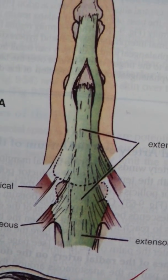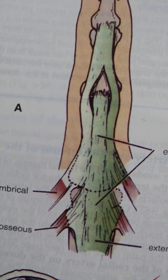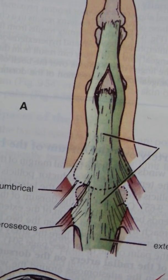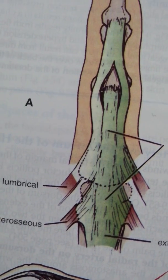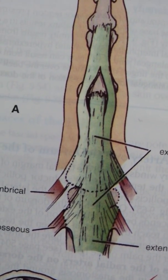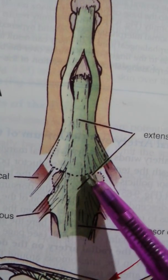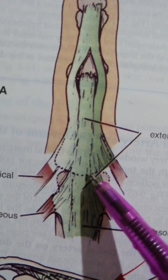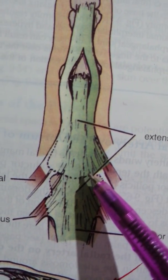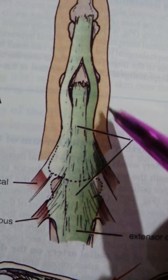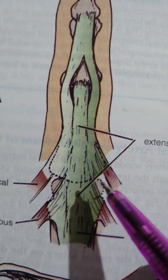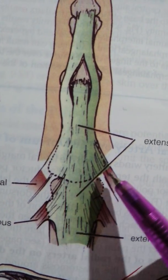So another important point to understand is that since this is a triangular aponeurosis, it must have a base and it must have an apex. The base of this triangular aponeurosis is proximal, and is in fact located over the metacarpophalangeal joint, which is the joint between the metacarpal and the proximal phalanx. So it is located at this level.